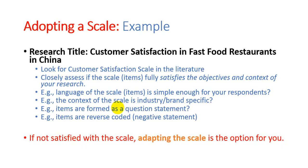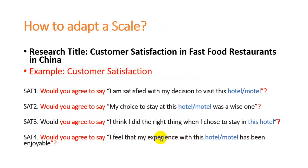However, what do you do if you're not satisfied with the available published scale? Then the solution is adapting the scale — that's option number two. Our research title is customer satisfaction in fast food restaurants, and the variable we want to adapt is customer satisfaction. We need to critically review each item and look at whether they effectively fulfill the objective of our research.